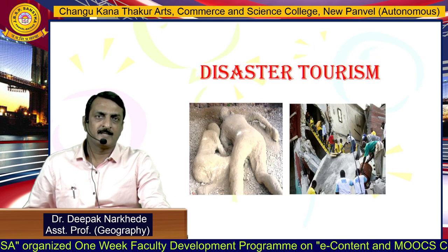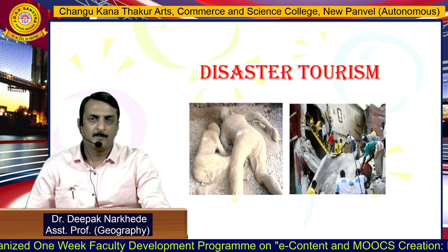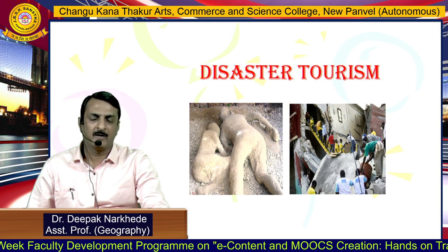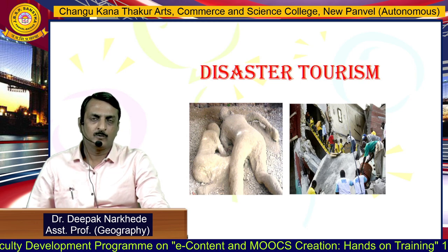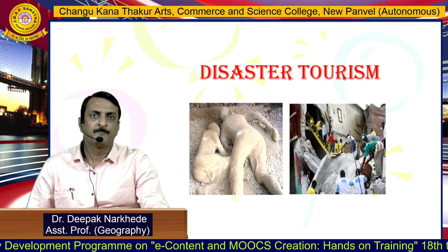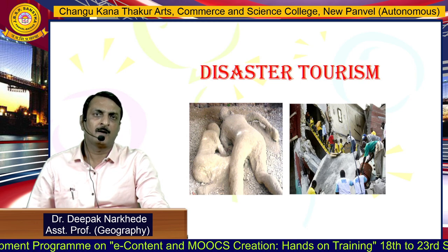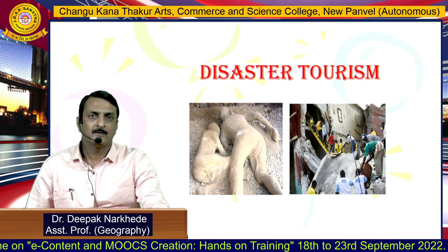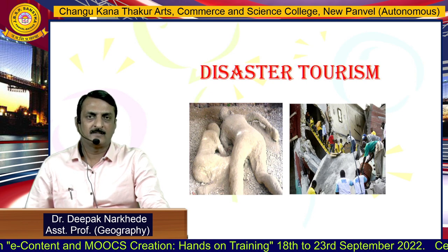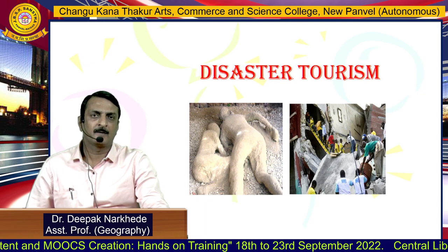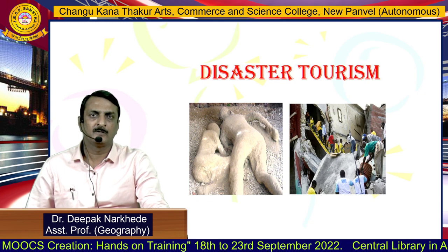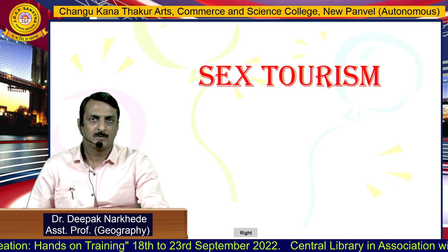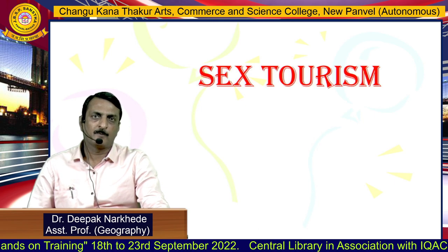The next type is disaster tourism, where people visit places where earthquakes, volcanoes, floods, and other disasters have occurred. They want to know how the disaster happened and what its effects were at that particular place. This type of tourism is called disaster tourism.